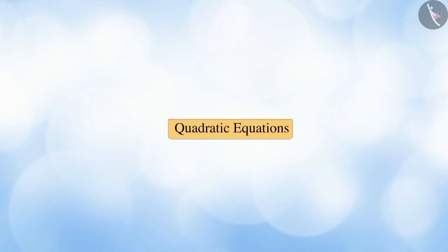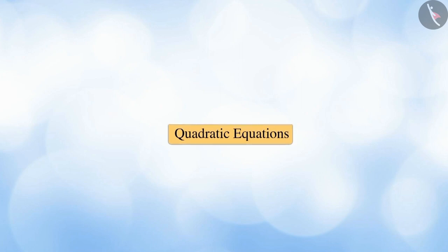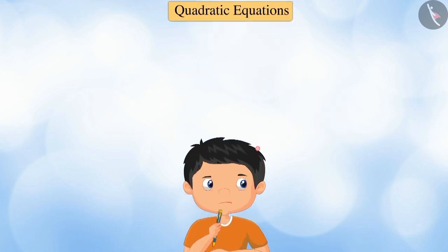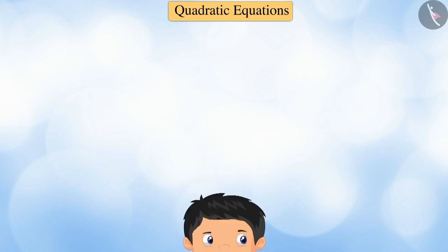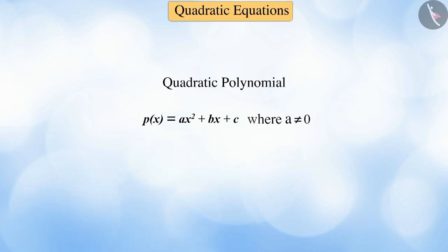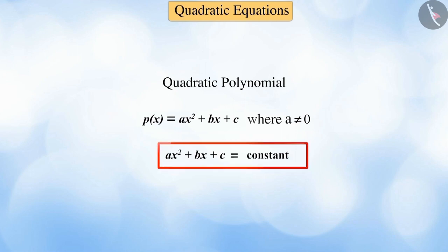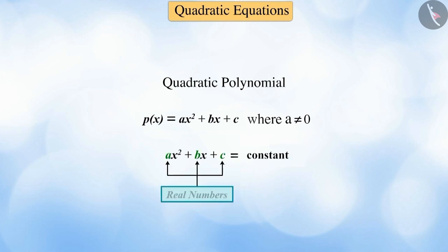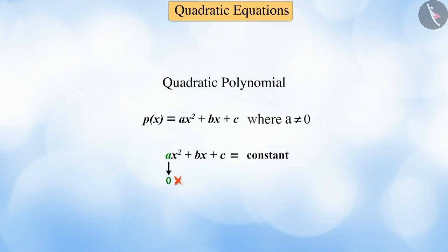Now let's understand quadratic equations. Consider the quadratic polynomial p(x) equal to ax² plus bx plus c. When this quadratic polynomial is equated to a constant, this polynomial gets converted into a quadratic equation. Here, a, b, c are all real numbers and a can never be zero. So based on this conclusion, let's try to understand quadratic equations.